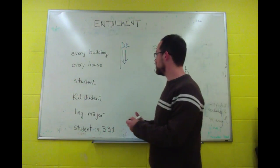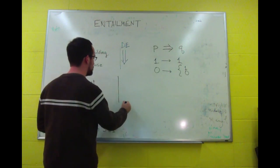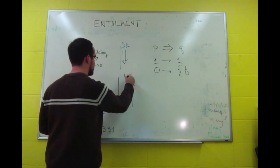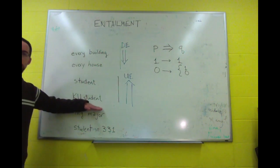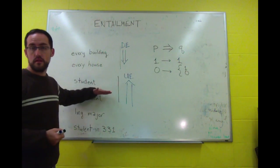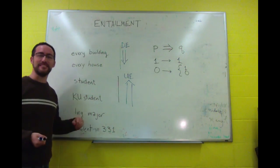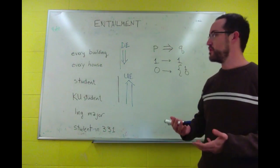And we like to talk about upward entailment when we go from the kind to the container, the larger kind, the thing that contains it. So we have downward entailment and we have upward entailment.